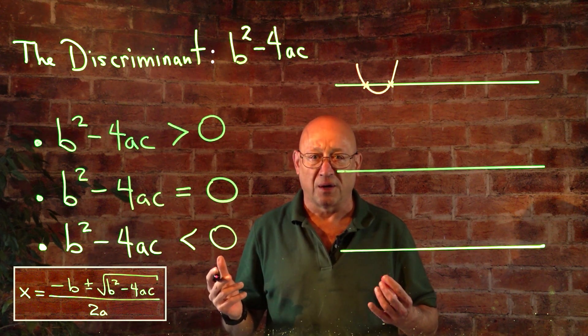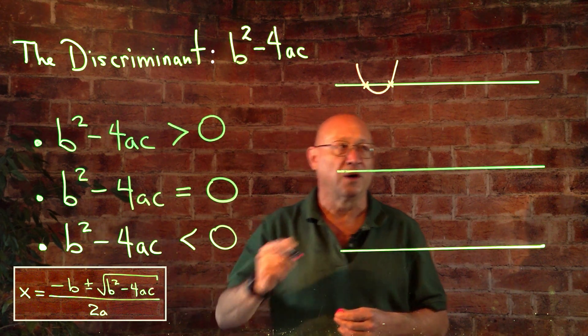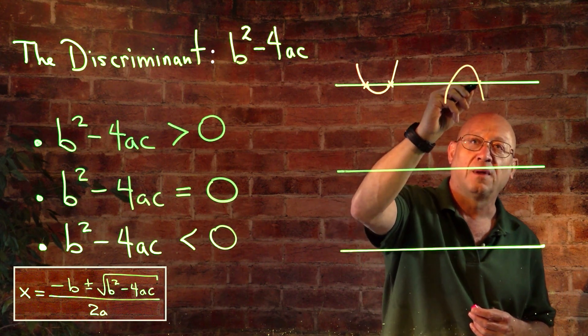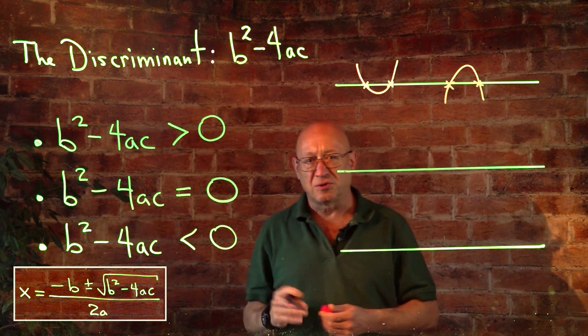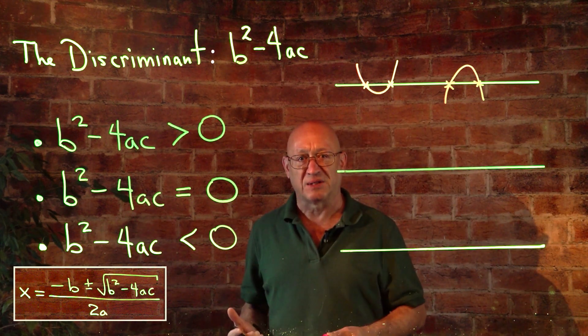Obviously, we can have a quadratic with a negative in front of the x squared, in which case the parabola is going to open downward. And we get our two answers. So that's the situation where what's under the radical is positive.